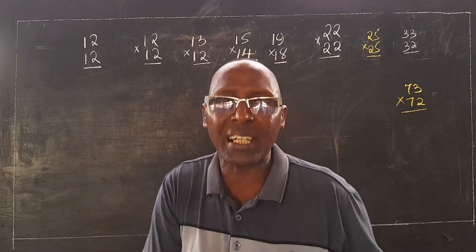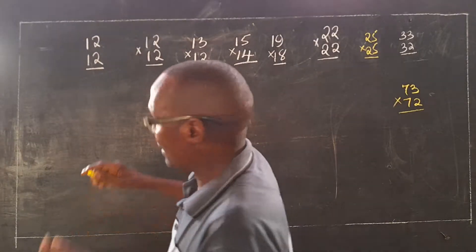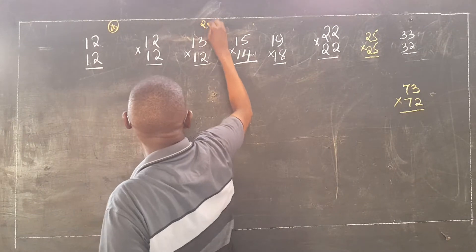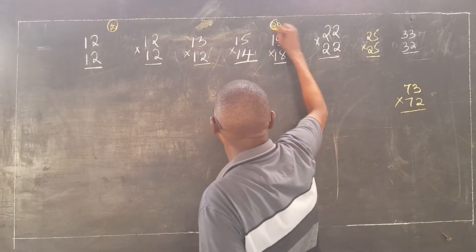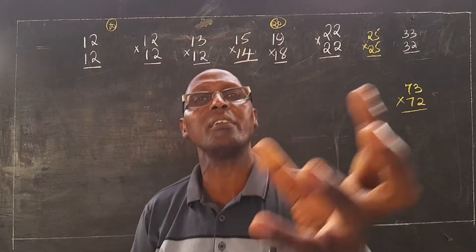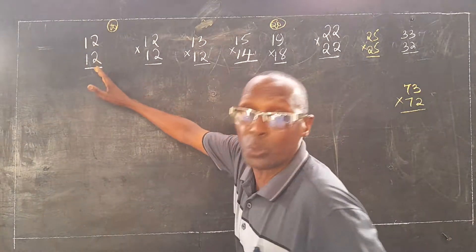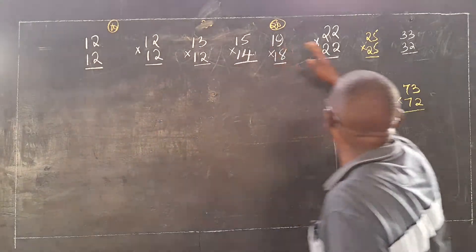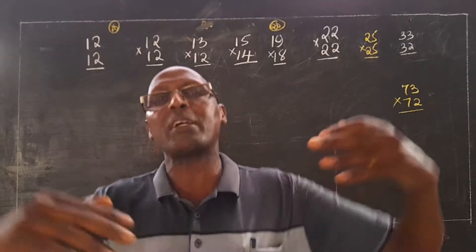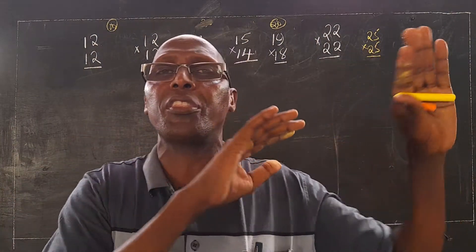The special method can only be applicable to numbers — digits between 10 and 20. All these questions, you can use the special method. Again, you can also use the general method, including the ones which are here. So let me start with the special method, then come to the general, which cuts across all the others.